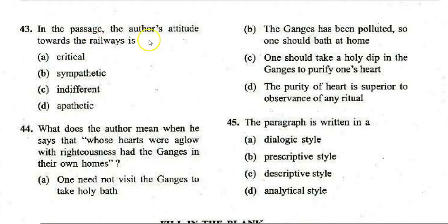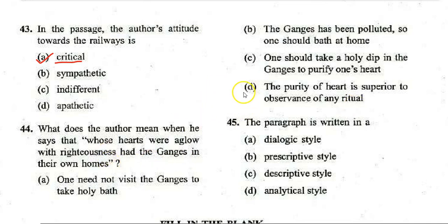Next: The author's attitude towards the railways in the passage is A. critical, B. sympathetic, C. indifferent, D. apathetic. The correct answer is A — critical. Next: What does the author mean when he says 'those whose hearts were aglow with righteousness had the Ganges in their own homes'? The correct answer is D — the purity of heart is superior to the observance of any ritual. The paragraph is written in an analytical style — option D.